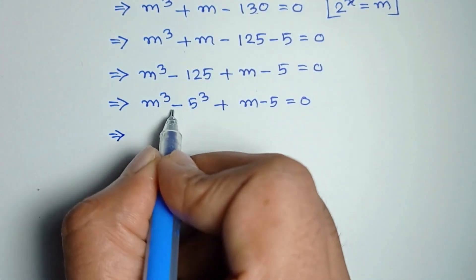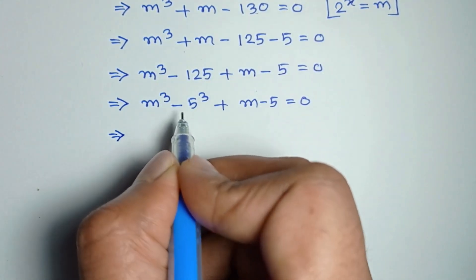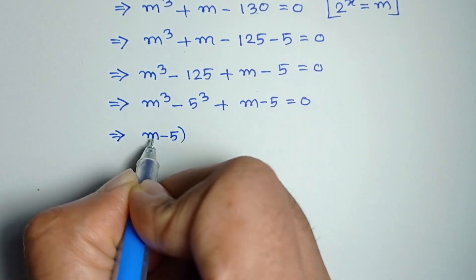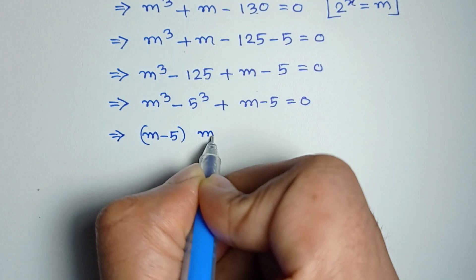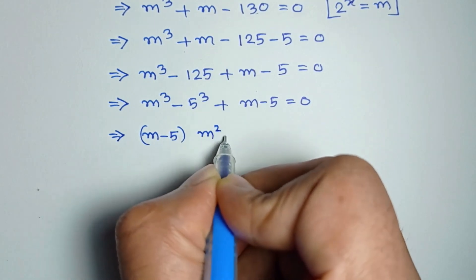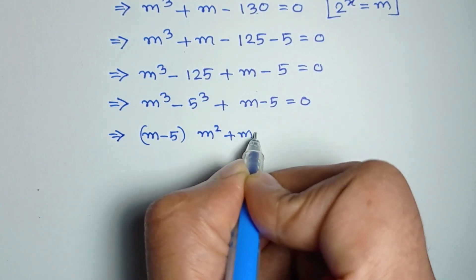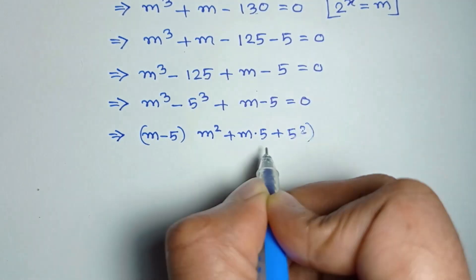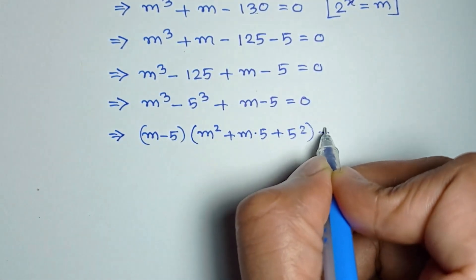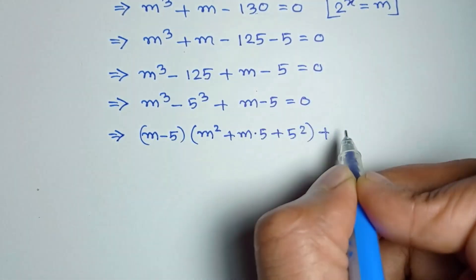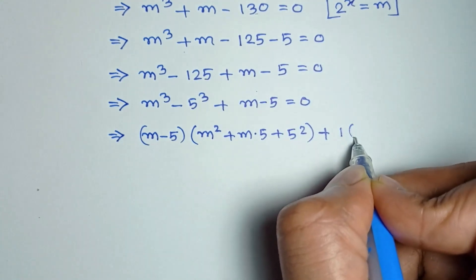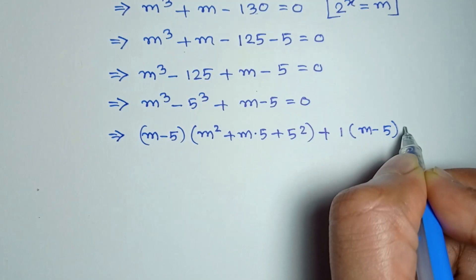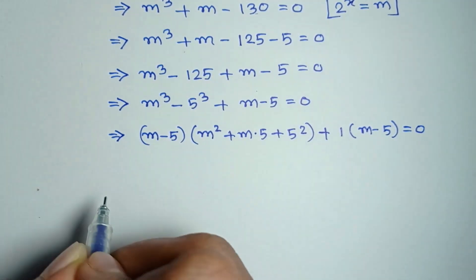Applying the a cubed minus b cubed formula, we get m minus 5 times m squared plus 5m plus 25, plus taking 1 common, we get 1 times m minus 5 is equal to 0.